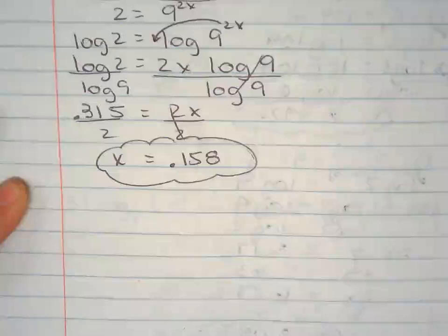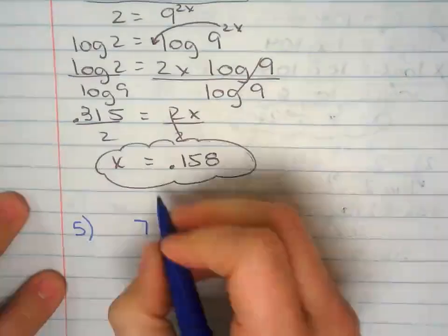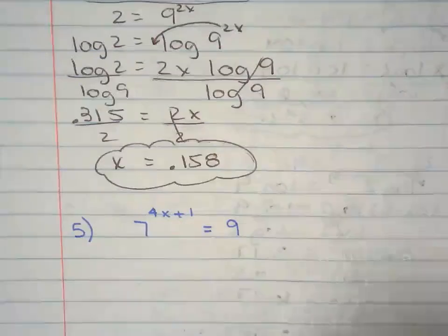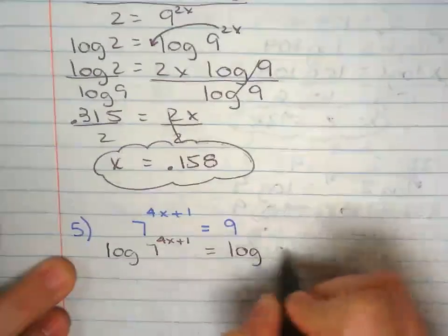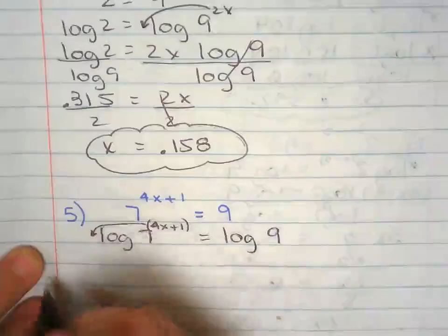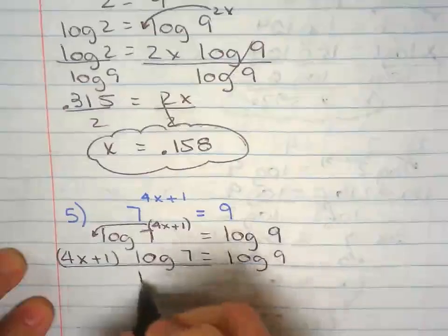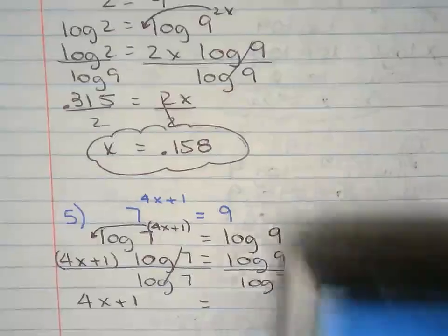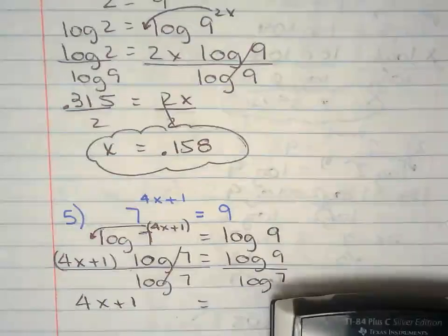Last one. So I can take the log from both sides. Bring the exponent right there to the front to multiply. That's the power property. Divide both sides by log of 7.